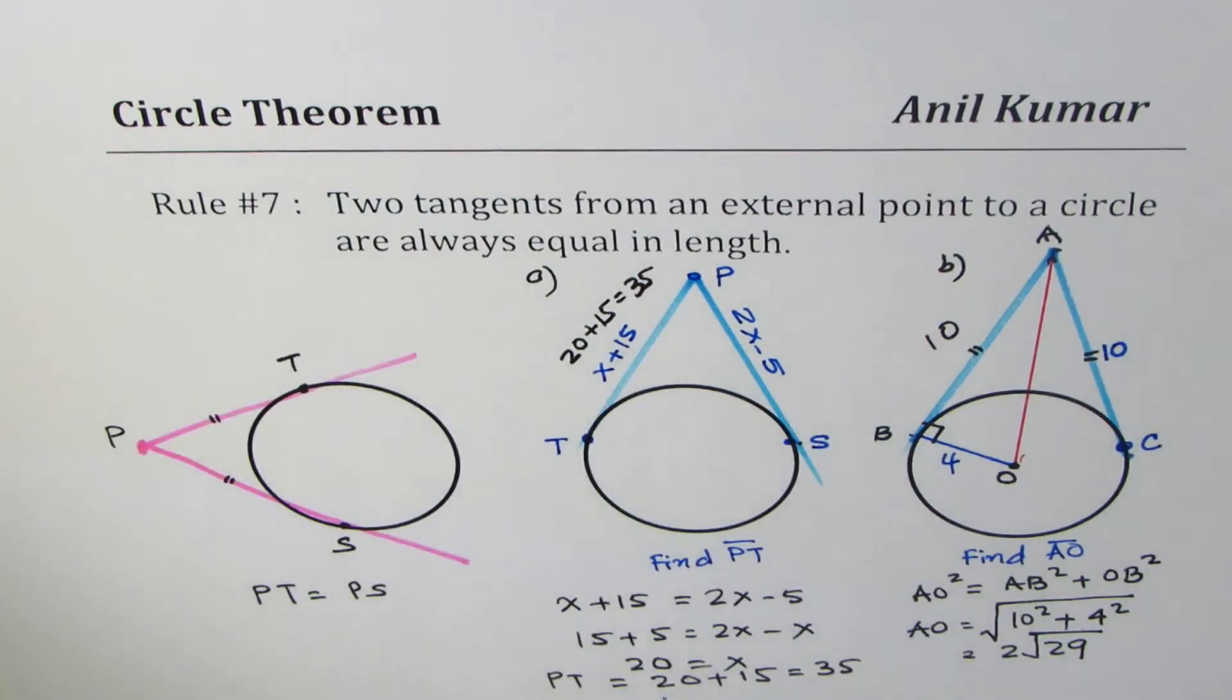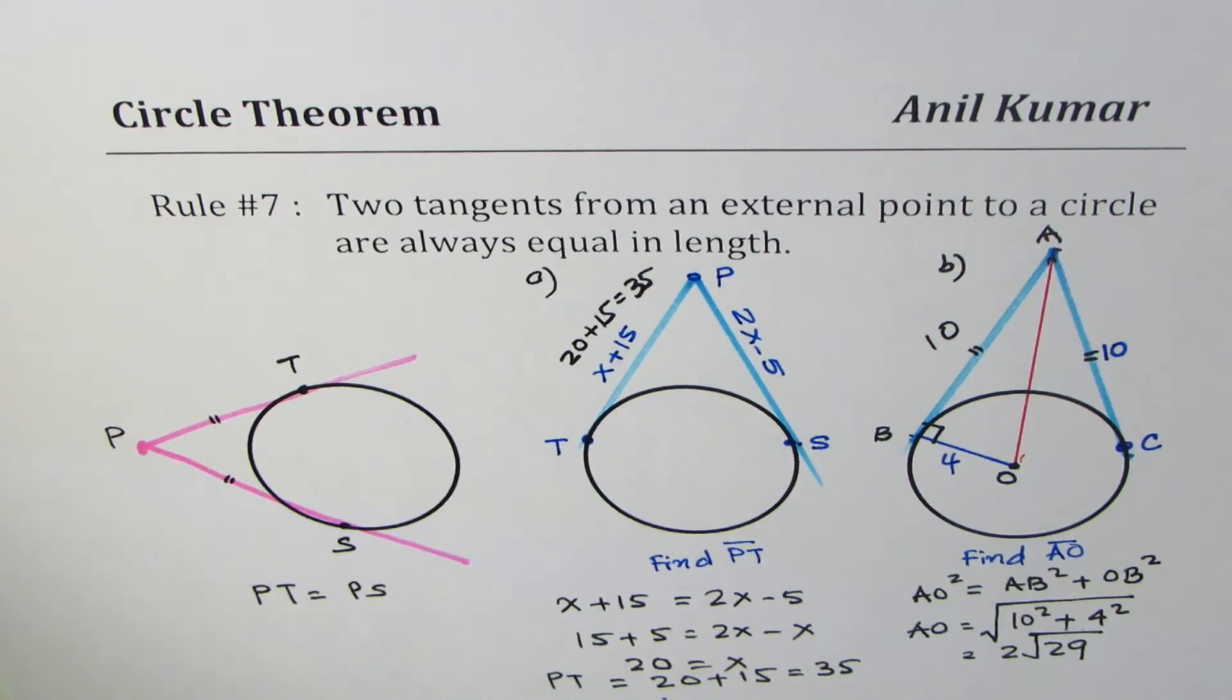So that is how you would actually solve such questions. So I hope you understood the rule that two tangents from an external point to a circle are always equal in length. So based on this rule, many questions relating to circles and tangents can be solved. I hope you appreciate it. Thank you, and all the best.